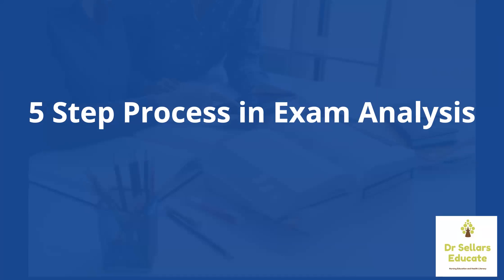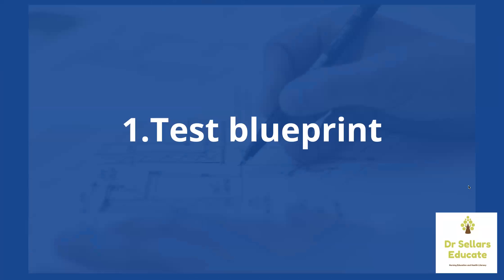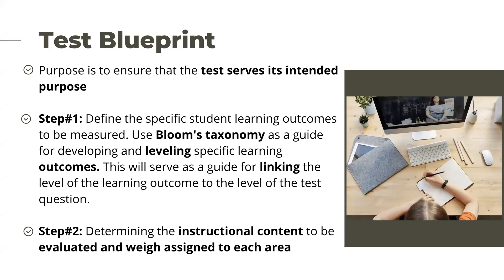We've broken it down into a five-step process. Step one is the test blueprint — a very important step. Its purpose is to identify whether or not we've met our objectives in determining if students have learned the information. Step one is to define the specific SLOs or student learning outcomes we want to measure, using Bloom's Taxonomy as our guide for developing and leveling those learning objectives to link the level of outcomes to the level of the test question.